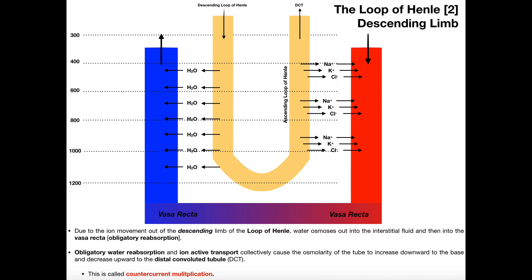We have something similar in the loop of Henle. This whole thing involves counter current multiplication, but we have reabsorption of ions and then water follows. Water just osmoses out because it goes where the salt is.